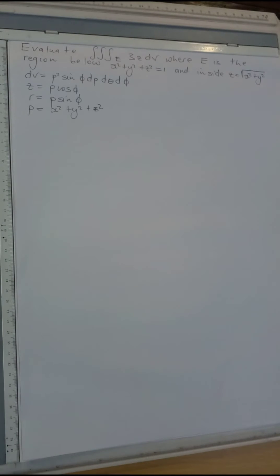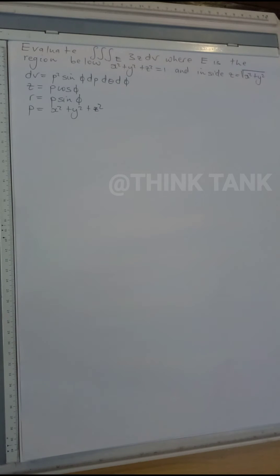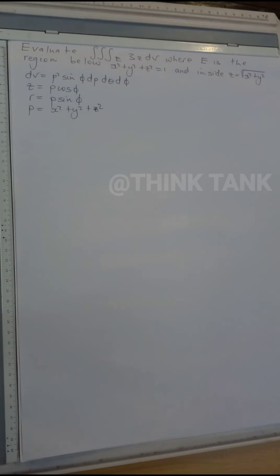Hi guys, welcome back to Think Tank. In this video I am going to talk about triple integrals and spherical coordinates. We have to find the volume of a region below the sphere of equation x squared plus y squared plus z squared equals 1, and inside a cone of equation z equals the square root of x squared plus y squared.